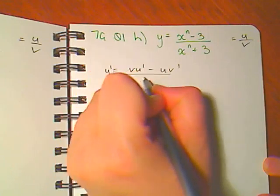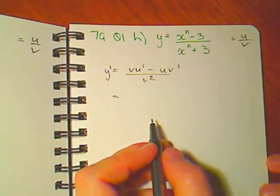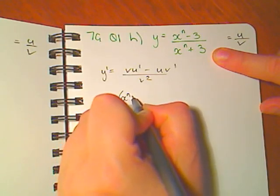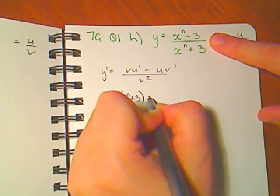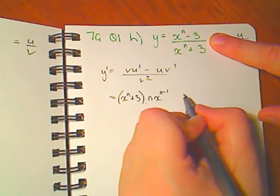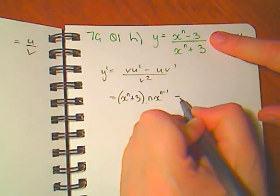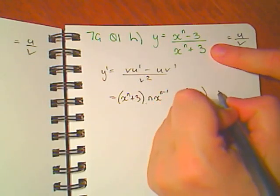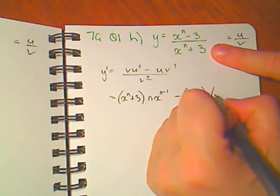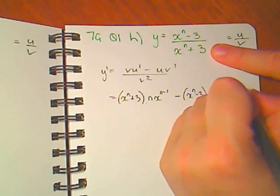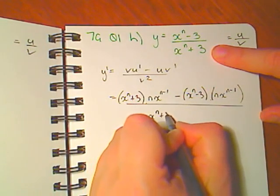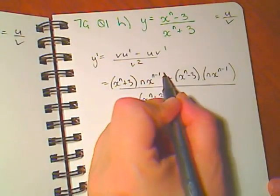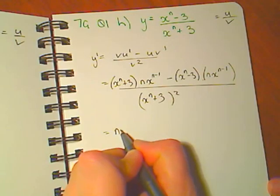We're going to identify that that's u and that's v using our rule. I'm going to say the rhyme as I fill it in. The bottom times the derivative of the top minus the top times the derivative of the bottom all over the bottom squared.